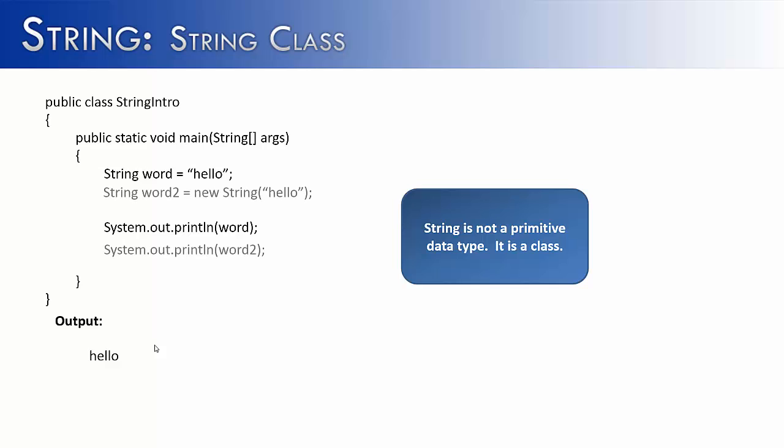But watch what would happen if I construct an object of the string class. String word2 equals new string hello. Do you think it'll work? Absolutely it'll work. And that is because string is a class. And you can construct objects of a class. You can't do that with primitives.